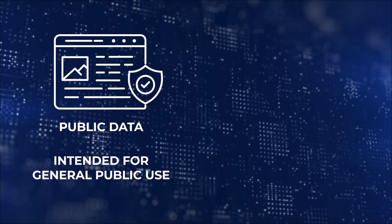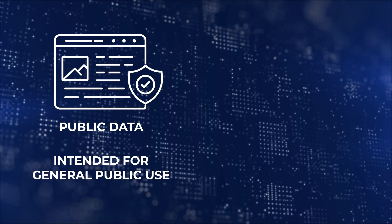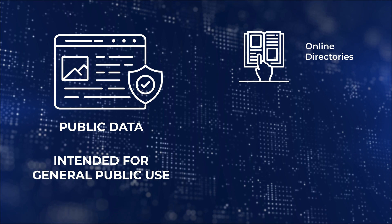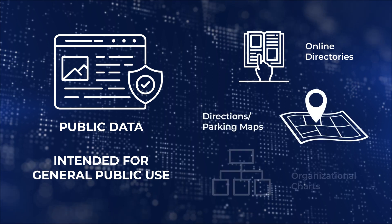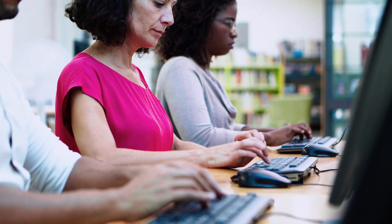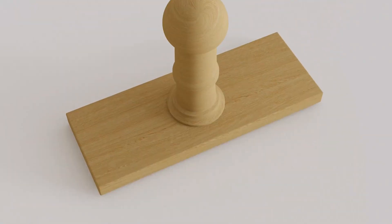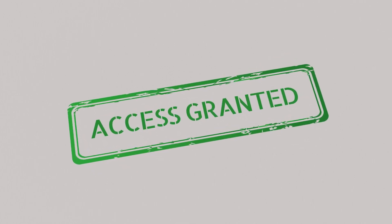As the name implies, public data is intended for public use and is usually freely available. Examples include online university directories, directions, parking maps, organization charts, and more. These may still have some safeguards in place to protect from malicious or inadvertent alteration, but usually have fewer or no access restrictions and the life cycle may be managed in a relatively discretionary manner.